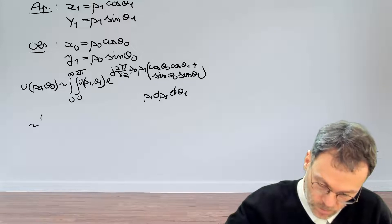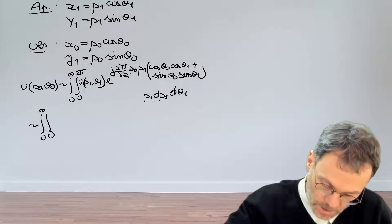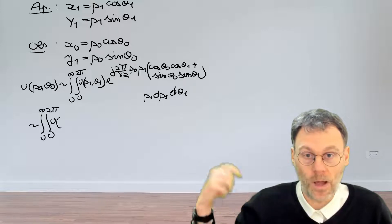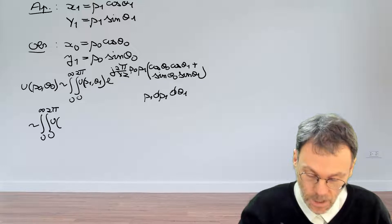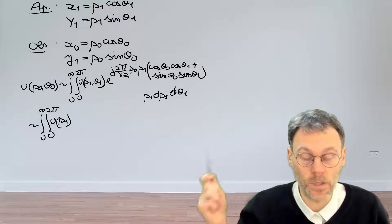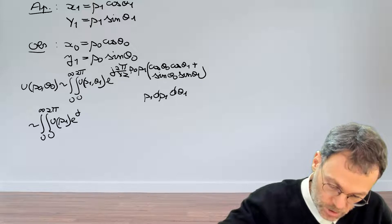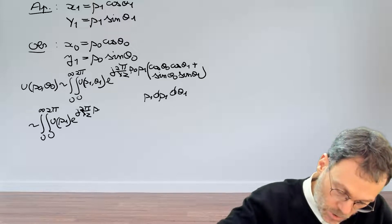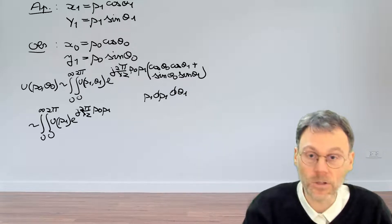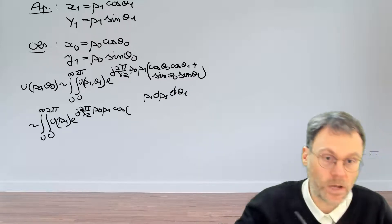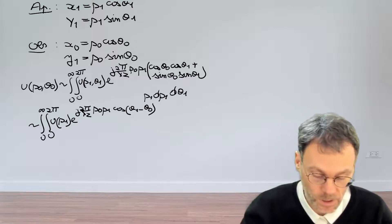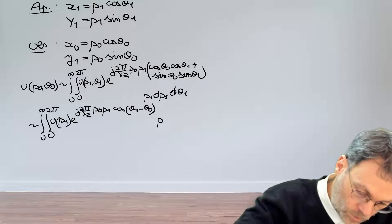Cleaning things up, this becomes proportional to an integral from 0 to infinity and 0 to 2π of u(ρ₁, θ₁). Since everything is circularly symmetric, u depends only on ρ₁ and not on θ₁. The exponential factor becomes exp(j·2π/(λz) · ρ₀ρ₁ · cos(θ₁ − θ₀)), using the cosine of the difference of the two angles, and we still have ρ₁ dρ₁ dθ₁.